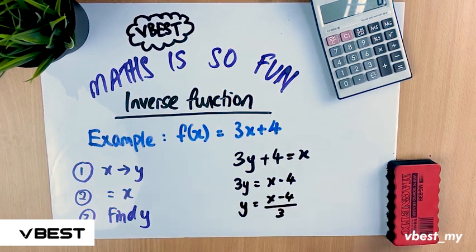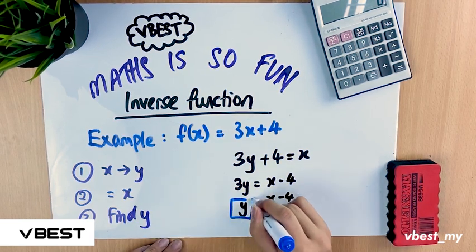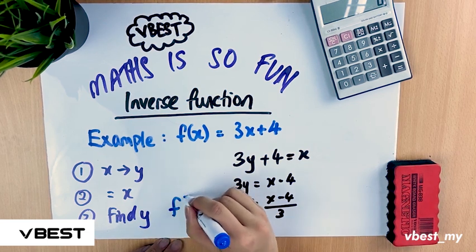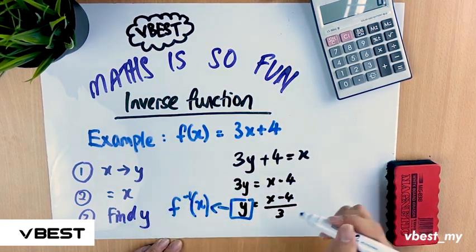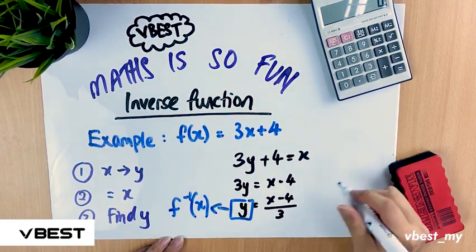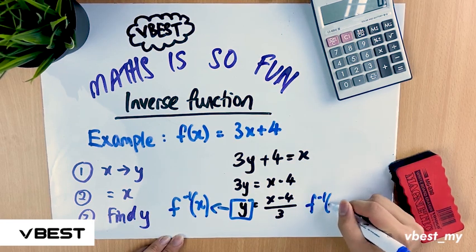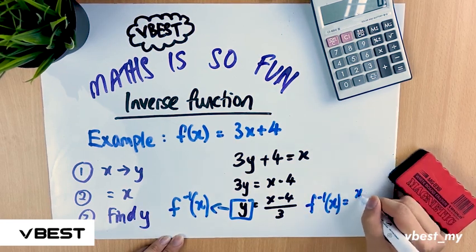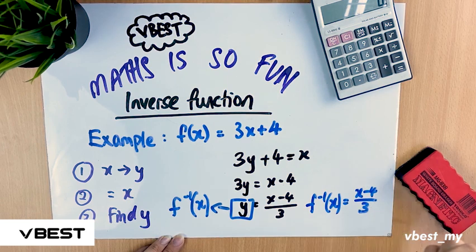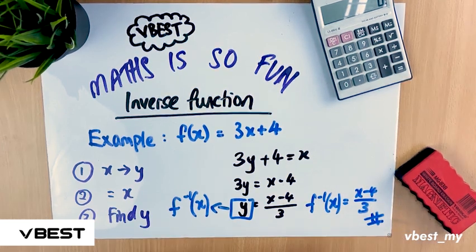This y is basically known as the inverse function, which is f^(-1)(x). Your inverse function will be written as f^(-1)(x) = (x - 4)/3. That's my final answer. Thank you.